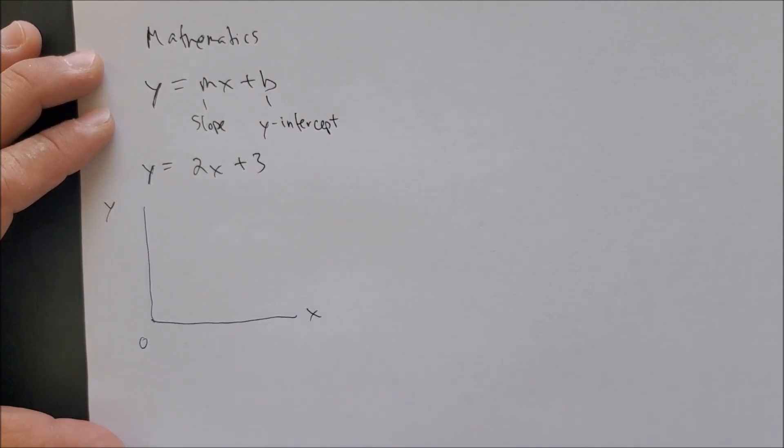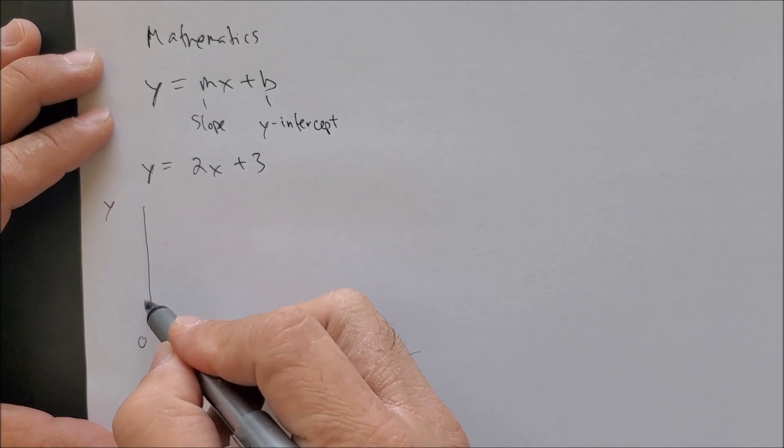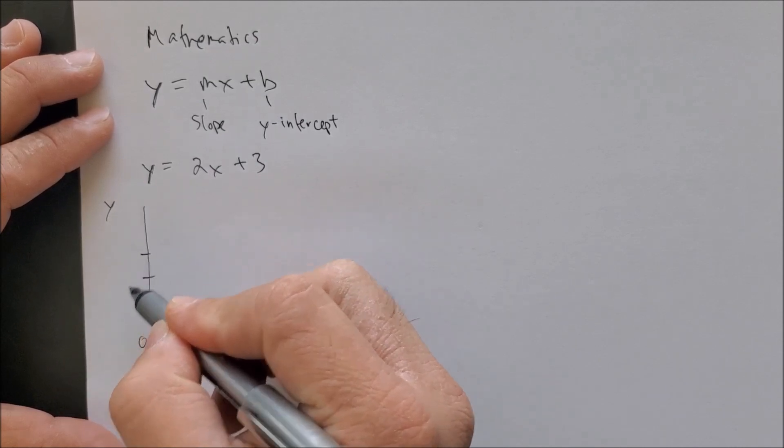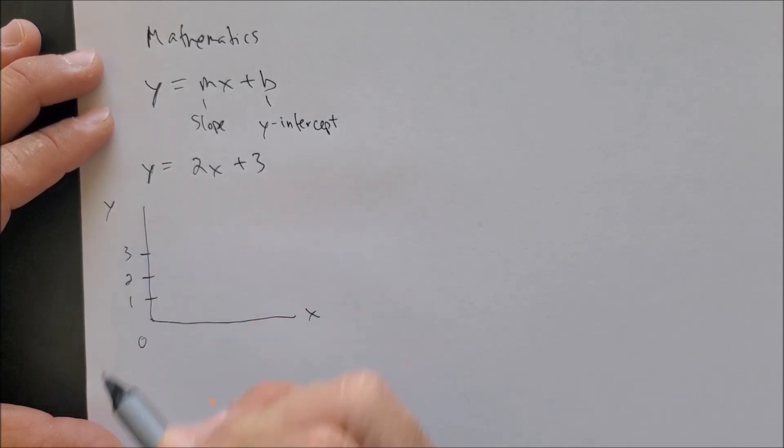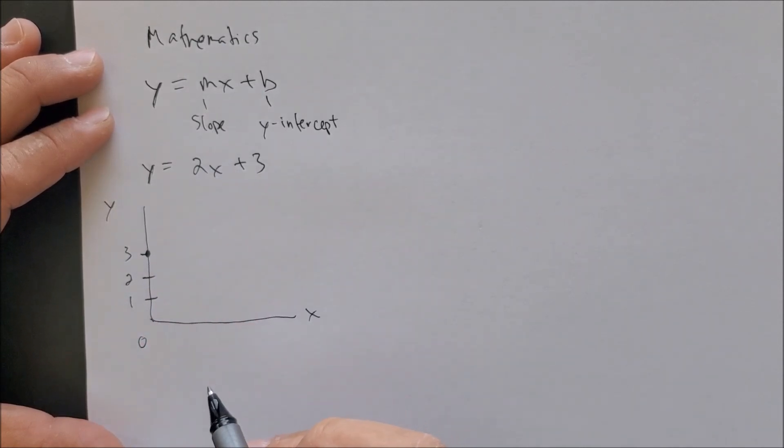the y-axis. Our y-intercept is 3 on the y-axis, 1, 2, 3. And we know that the slope is rise over run,